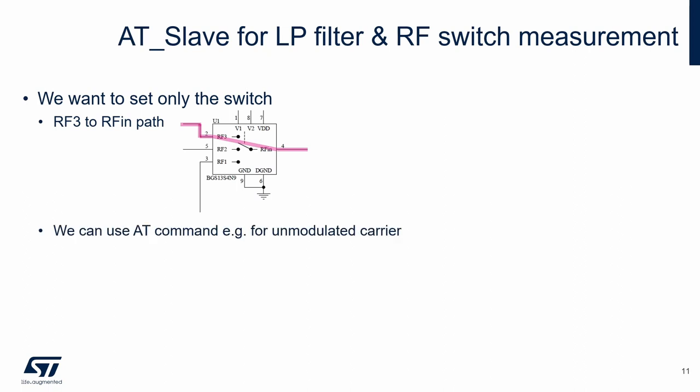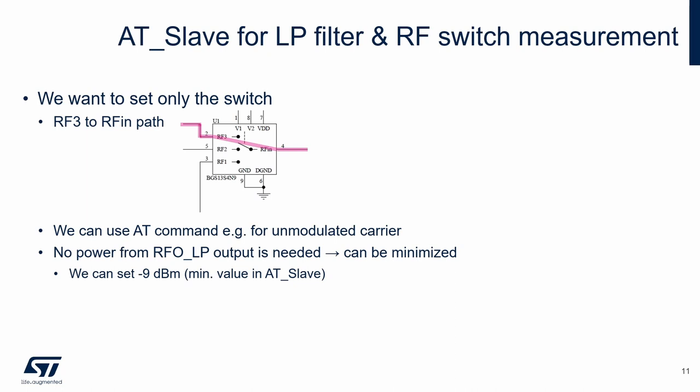Because there is no dedicated AT command to control only the RF switch, we can use a command for unmodulated carrier. It switches the RF switch but also enables signal from the RFO-LP pin. Because the signal is not needed, it can be set to low power, e.g. 9 dBm, which is the lowest possible value that can be set. We can use the following commands: ATTConf to configure the frequency and output power, and ATT tone which enables the carrier and sets the RF switch.